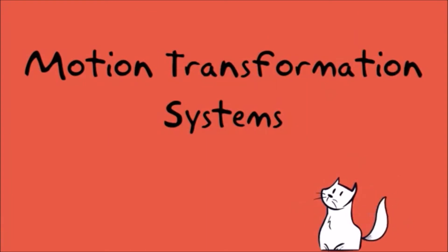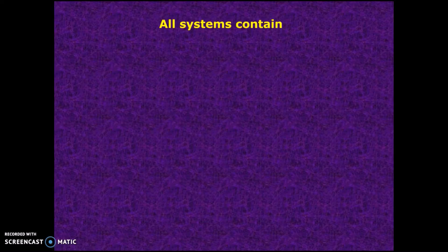They are called motion transformation systems, and we are going to look at the different types. First of all, let's define what a system is.